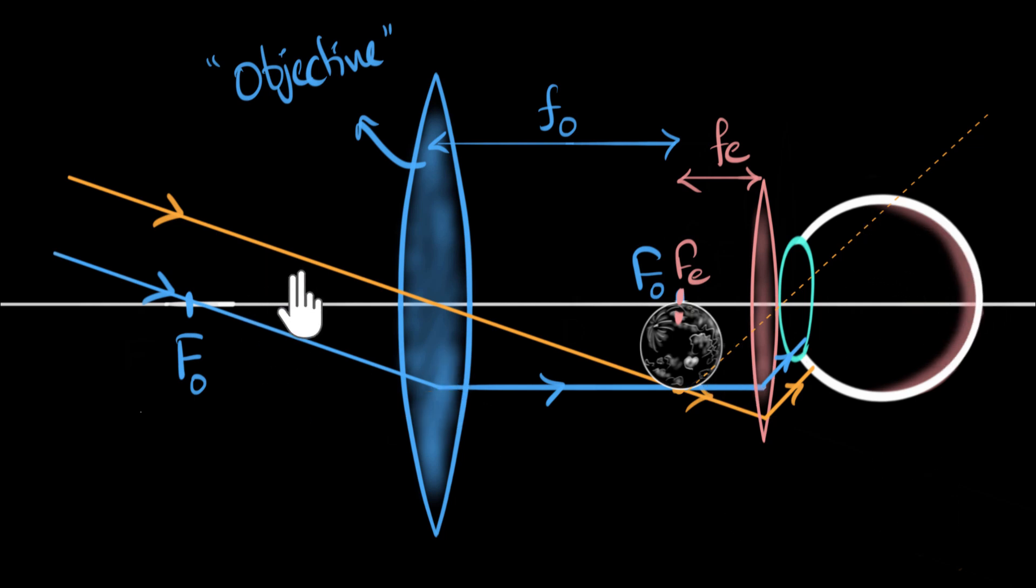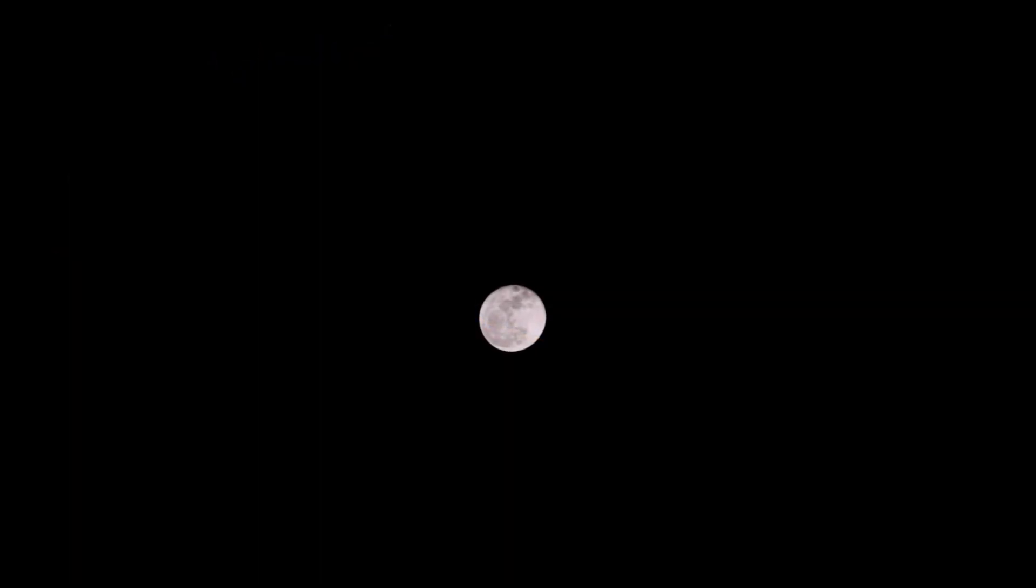We'll talk more about this ray diagram, its magnification a little bit later, but first let's demo this. So here's our moon one more time. The first thing we'll do is bring in a convex lens, which is going to be our objective. Notice that's forming a real image close to us. We're gonna bring in a convex lens. That's our convex lens, difficult to see that in the dark, but that is a real image formed very close to us.